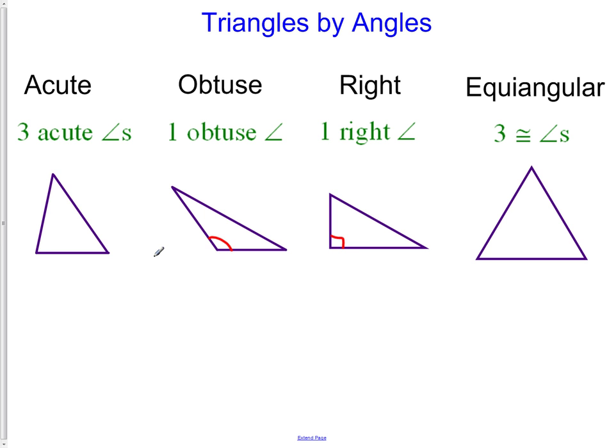Last is the equiangular. Equiangular triangles have three equal angles. All three angles are the same. And as it turns out, all three of those angles with an equiangular will always be 60 degrees. Never more, never less.